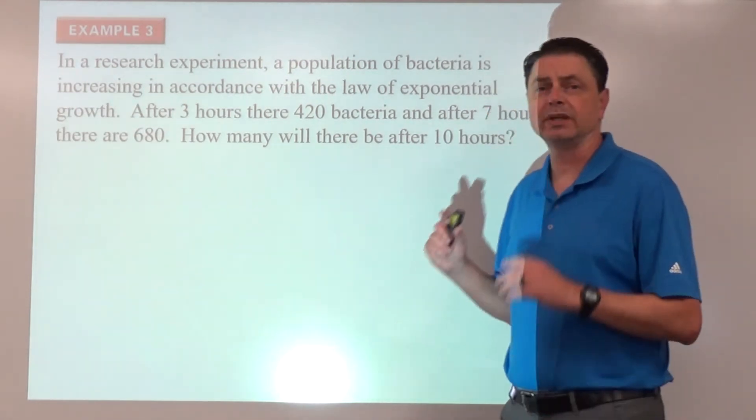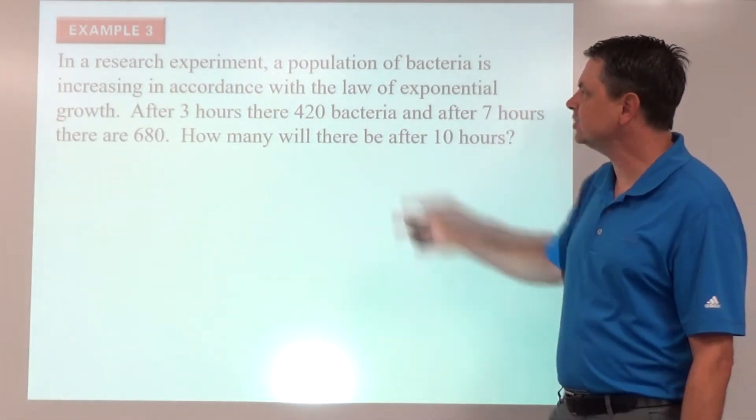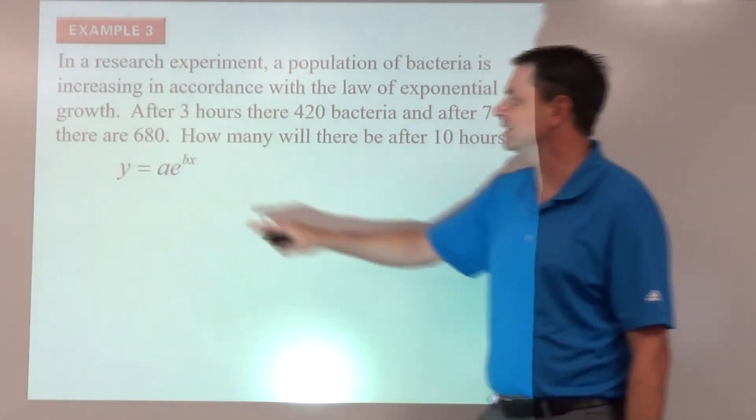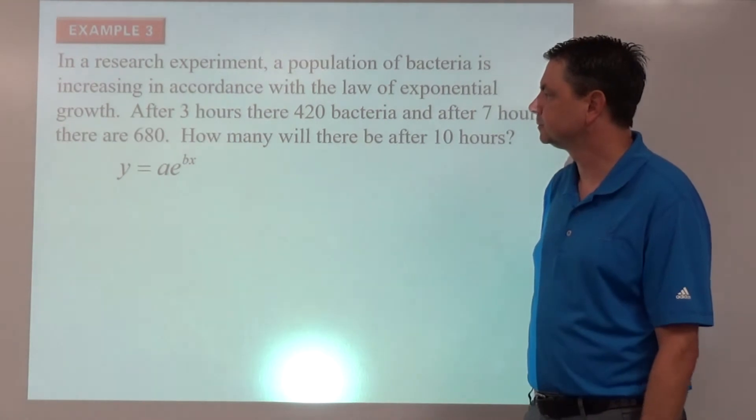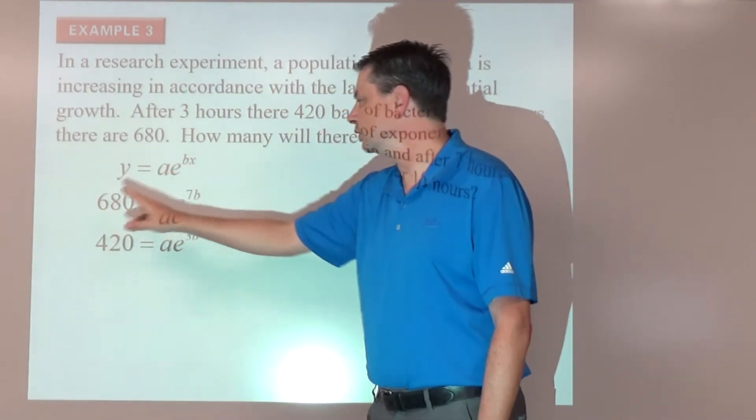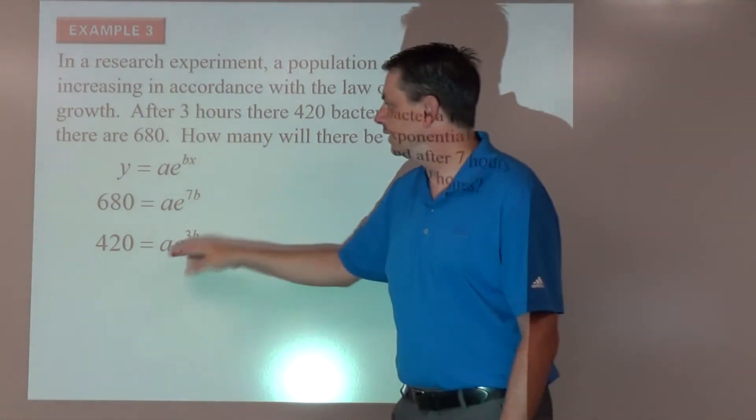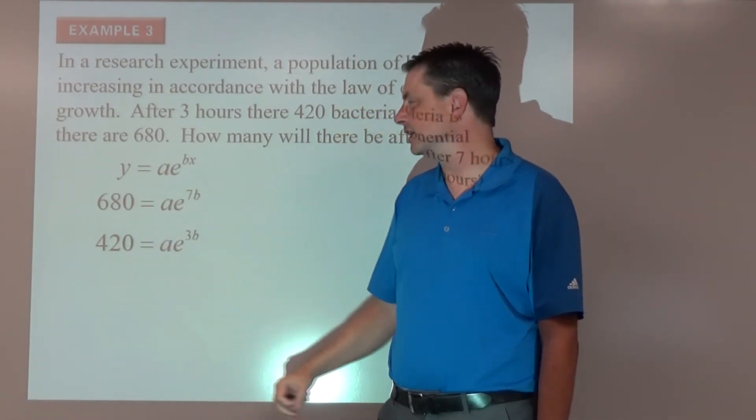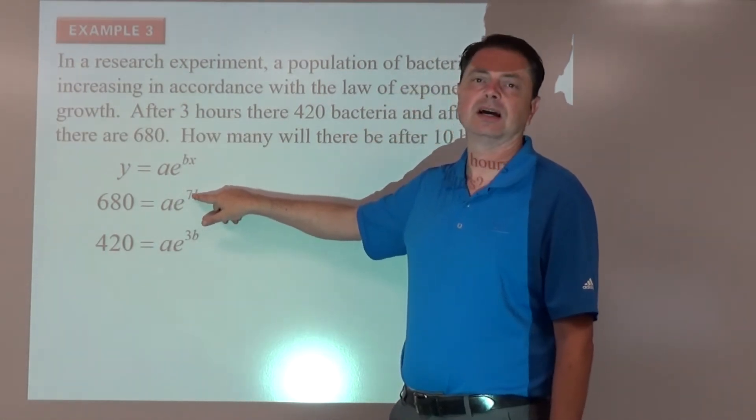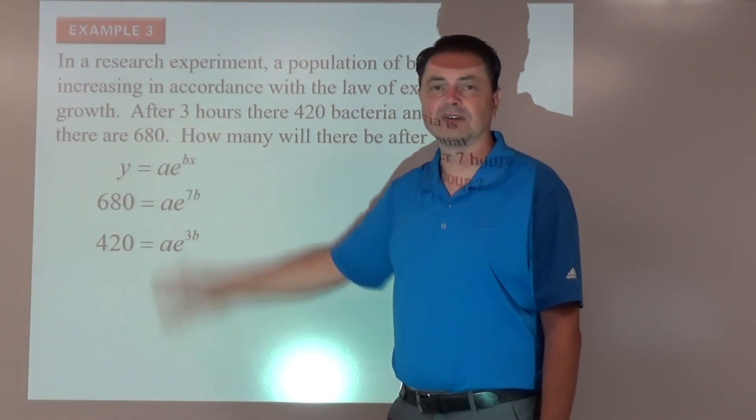So we would like to find the exponential function first. Then we can use that function to predict for 10 hours. So each of these three hours, 420 bacteria kind of generates a data point for us. We are dealing with exponential growth. So each one generates an equation. The amount later is equal to the unknown starting amount times e to the power of seven hours here. And then 420. It doesn't really matter the order that you list them. It's just my preference that the one on top, if we're stacking them, and I do like to stack them, is the one with the higher time amount and therefore kind of higher exponent.